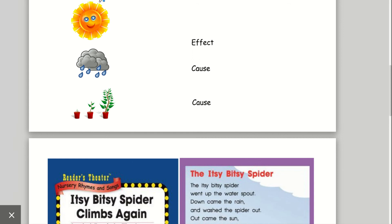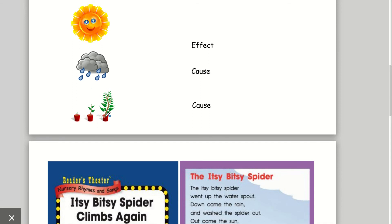So I can see the sun shining, a cloud and rain, and a plant growing. I think the plant growing is the effect. And why did it grow? Because of the cause. It was sunny and the plant got water from the rain.